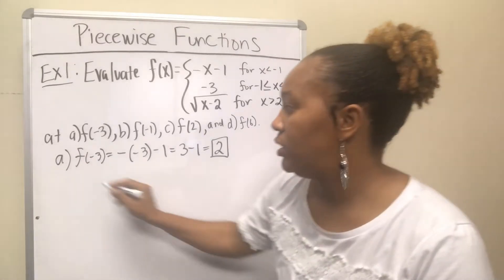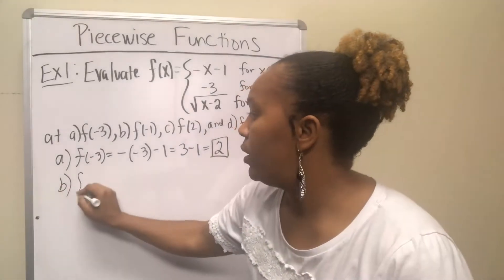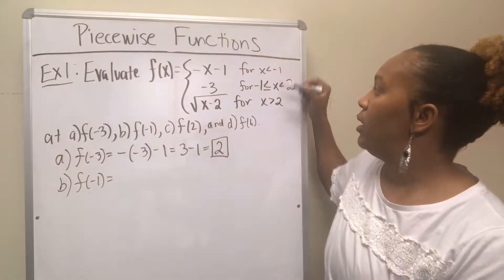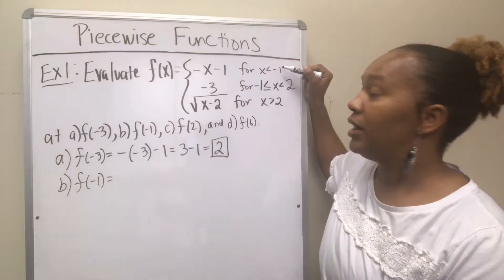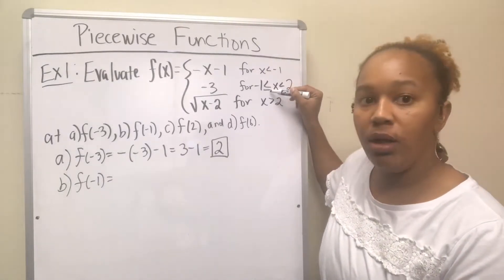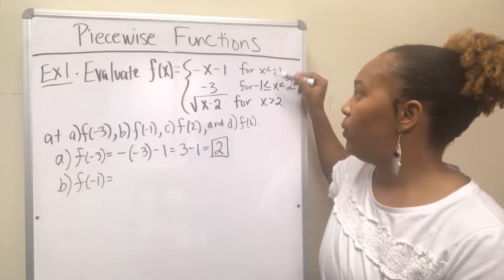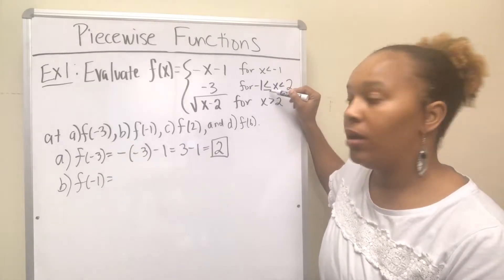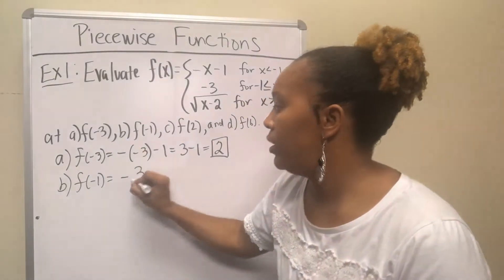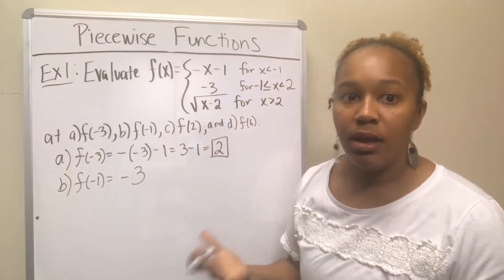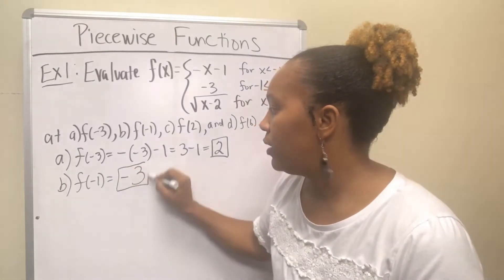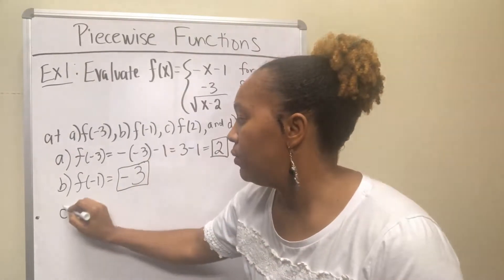For part B, f(-1): the first piece requires x strictly less than negative 1, but the second piece says x is greater than or equal to negative 1. So negative 1 is included in the second piece. That function says f(x) equals negative 3 — there is no x to plug in, so you just get negative 3 out. That's a constant function, so f(-1) equals negative 3.